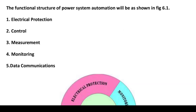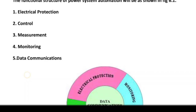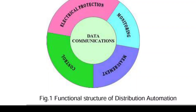The general functional structure of power system automation includes electrical protection, control, measurement, monitoring, and data communication. These five elements are included in distribution automation. The cycle works as follows: first, protection; then monitoring — checking whether a fault has occurred or not; then the RTU remotely senses and acquires measurement data to determine if a fault exists; and finally, control action is taken. This is the functional structure of power system automation.